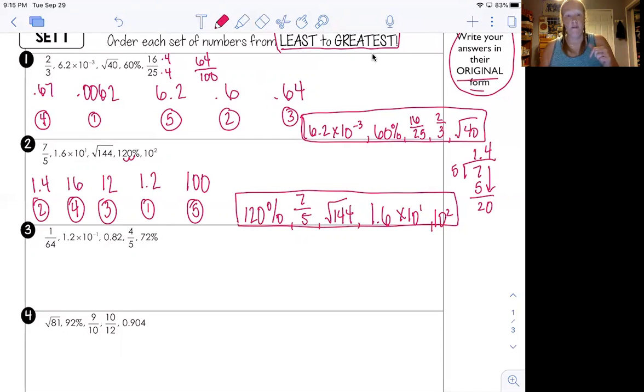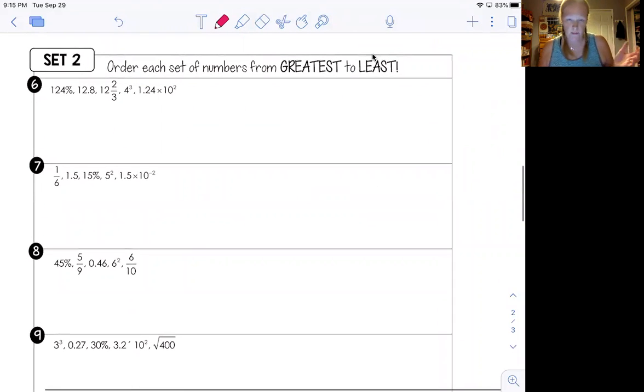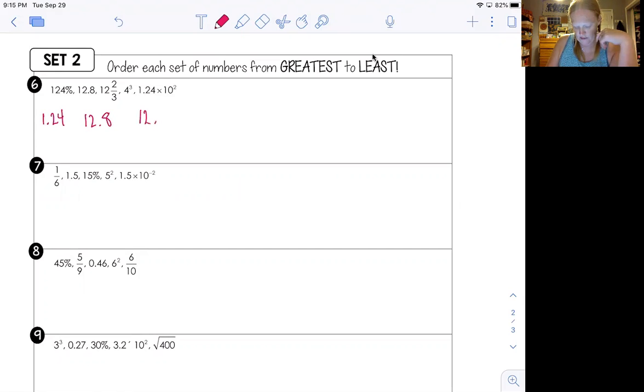Alright. I just want to show you one more example because on the homework, it's similar. And the only other thing that's different on the back is you go from big to small. So you're ordering them in a different way. It's good for your brain to think about going both directions. Okay. So let me just look and see what example I wanted to show you. Yeah. I'll show you the number six. So, 124% remember move the decimal two places. So I get 1.24, 12.8. Okay. That's just 12.8, 12 and two thirds. Remember two thirds is 0.67. So I'm going to call that 12.67. Ooh, four cubed. What's four cubed? Four times four is 16. And then times another four is 64. Okay. So four cubed is 64. Again, not even close to the other ones. Weird.